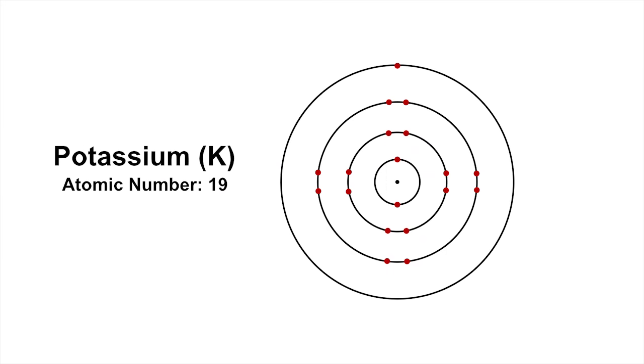Next comes Potassium, with the symbol K. And finally there's Calcium, whose symbol is Ca.